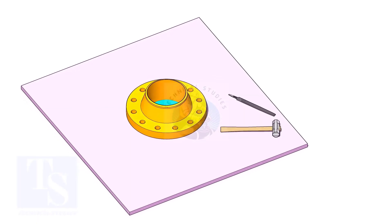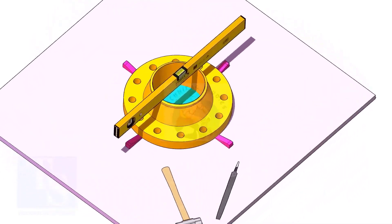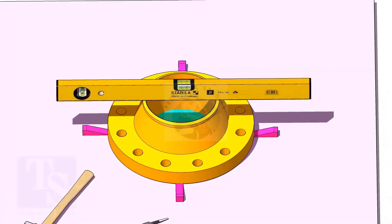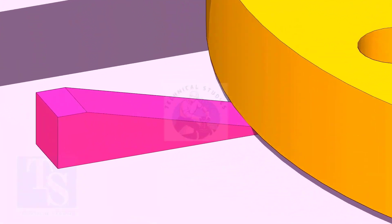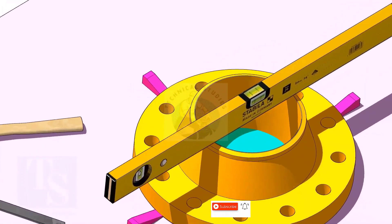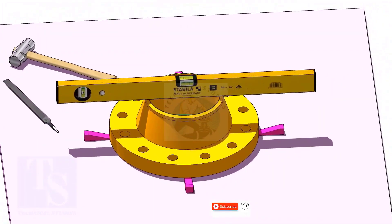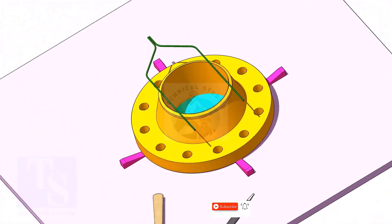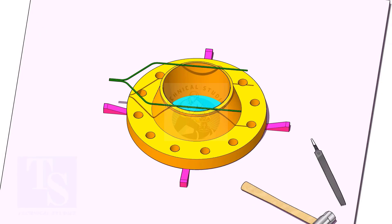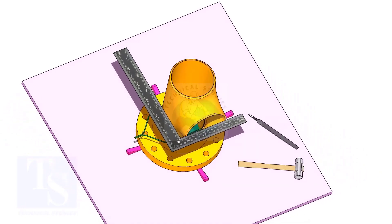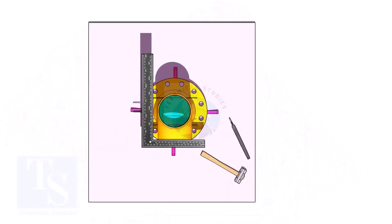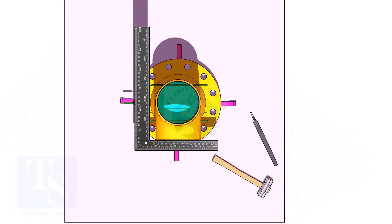Use small wedges to level the flange. Put the tee on the flange. Match the hole center of the flange and the tee face as shown.